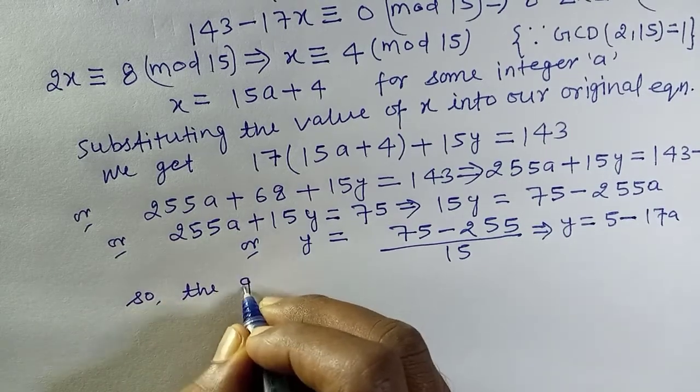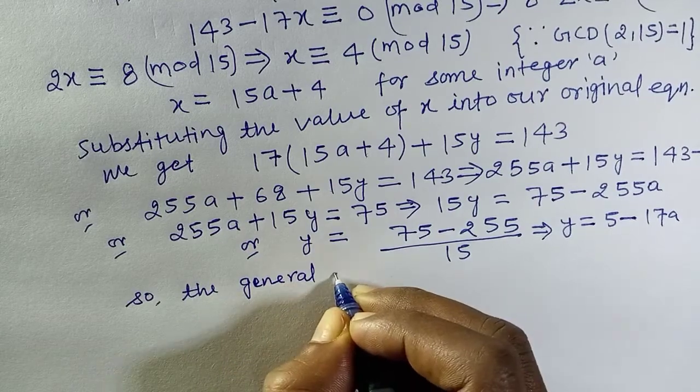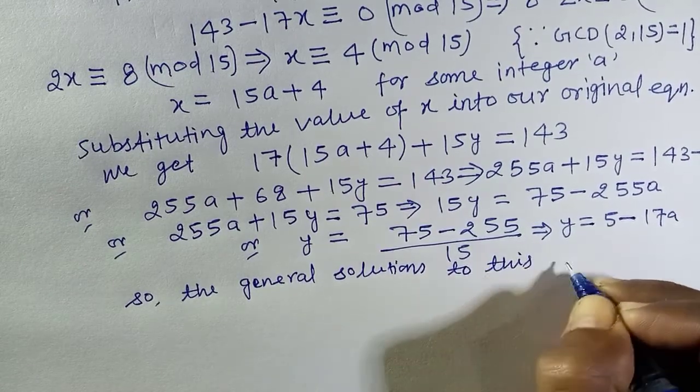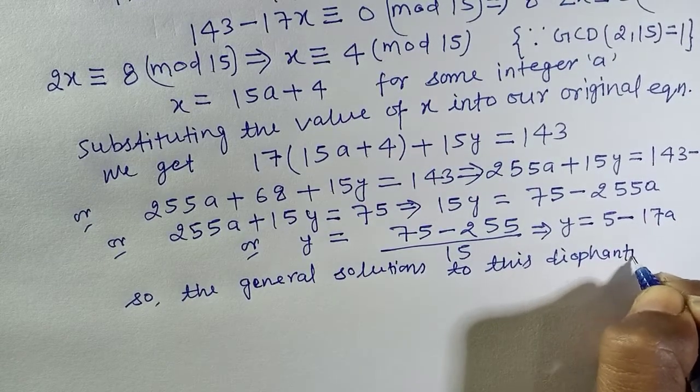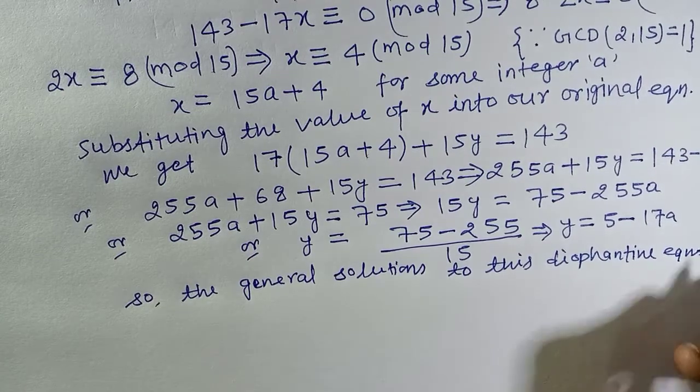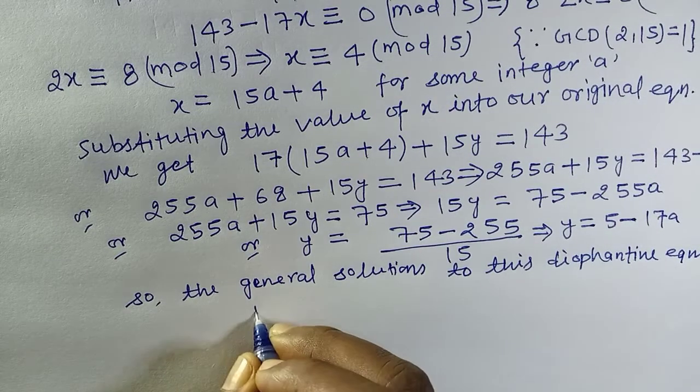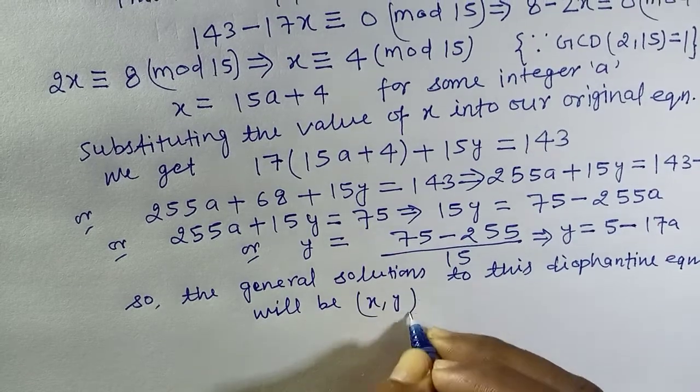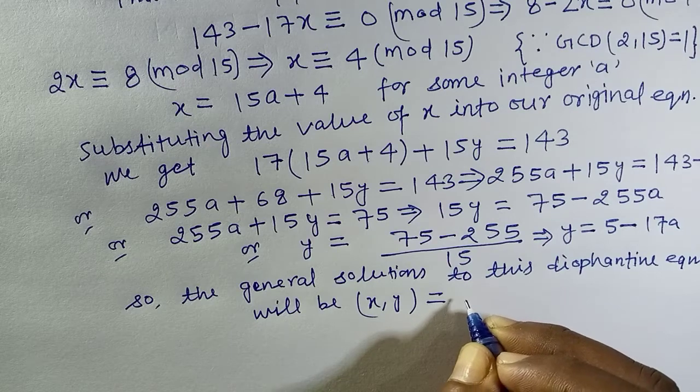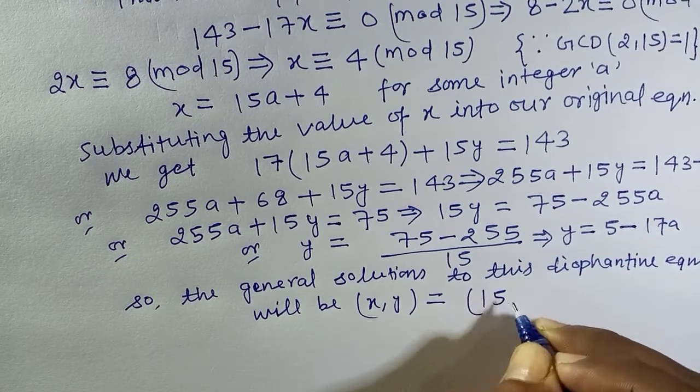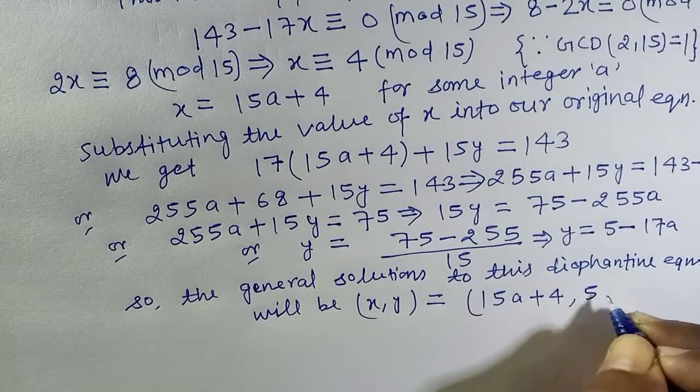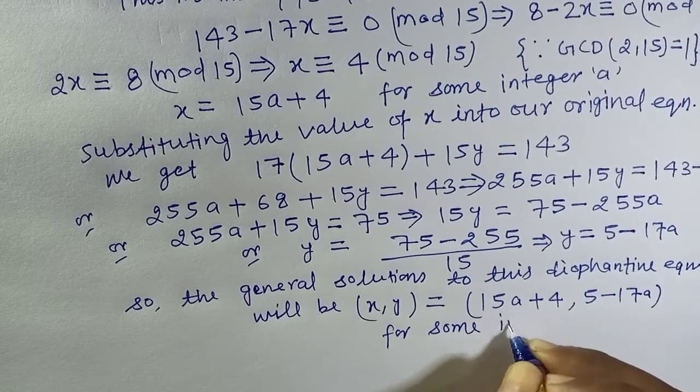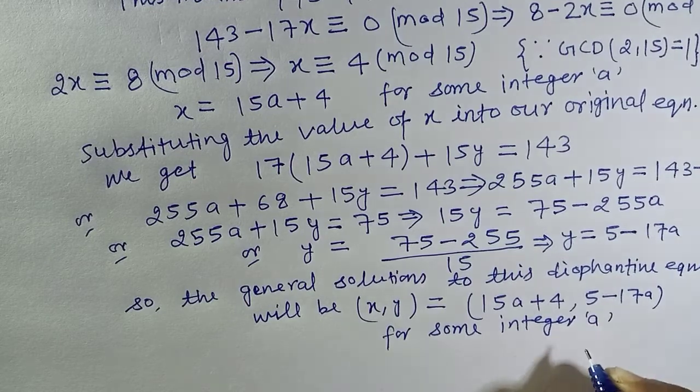So the general solutions to this Diophantine equation will be x equals 15a plus 4 and y equals 5 minus 17a for some integer a. That is our required answer.